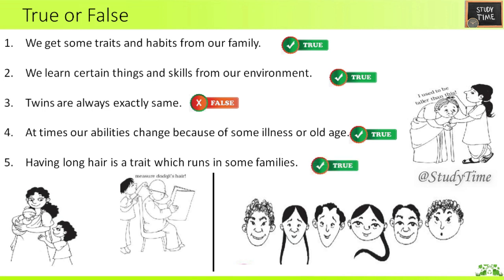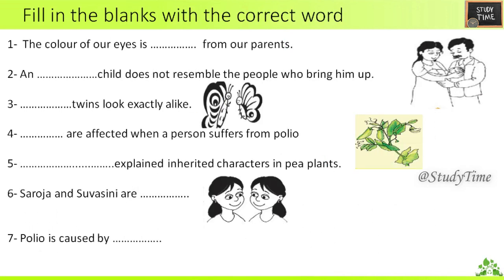Fill in the blanks: First — the color of our eyes is inherited from our parents. Second — an adopted child does not resemble the people who bring him up. Third — identical twins look exactly alike.